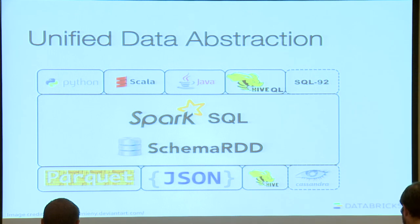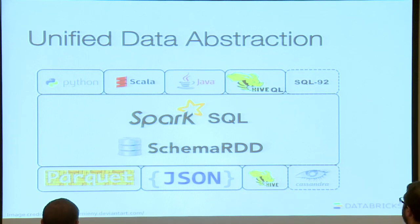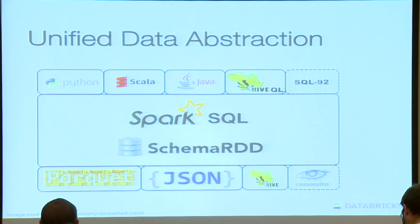Whether you want to write your data analysis pipeline in Python, Scala, HiveQL, or Java, you can do it through schema RDDs. You can also access a wide variety of data sources using this unified API — we have support for Parquet, JSON, Hive, and Cassandra, and we're working on other integrations as well. Cassandra and SQL 92 are future work items we'd like to integrate into the stack.